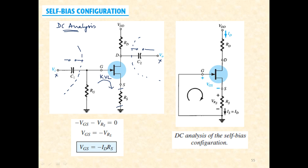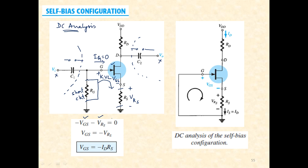Applying KVL: since JFET is a voltage-controlled device, gate current IG is again zero. Since IG is zero there is no voltage drop across RG — consider it a short circuit. The KVL expression simplifies to: minus VGS minus VRS equals zero, so VGS equals minus ID·RS, where VRS is the voltage drop across the source resistor.